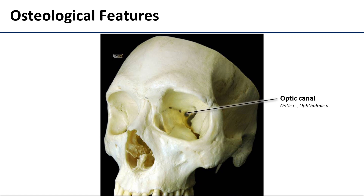The optic canal is this large, round opening in the posterior wall of the orbit. It transmits the optic nerve and the ophthalmic artery.